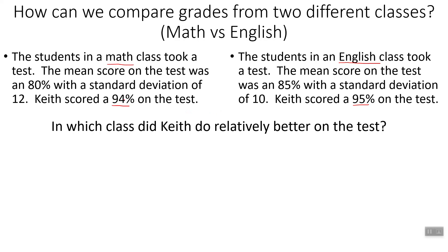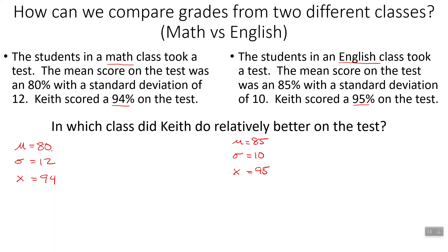But that's really not how we want to compare these things. The way we want to compare them is to see how much better than the average, or mean, Keith did in each class. So we can consider each class its own population. The mean for math is 80%, the standard deviation is 12, and his score X is 94. For his English class, the mean score was 85, the standard deviation is 10, and his score was 95. When we measure how far something is away from the mean, we measure using the standard deviation as our measuring stick.